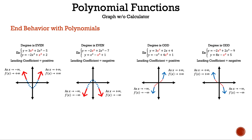If the degree is odd, then the graph looks like a cubic function, so one hand is up and one hand is down. If the leading coefficient is positive, then your hands form a positive slope. If your leading coefficient is negative, then your hands form a negative slope.